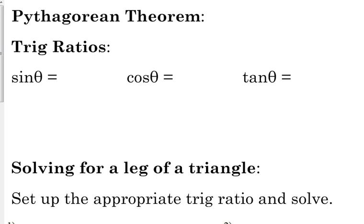I've got a spot there at the top just for you to rewrite in the Pythagorean theorem and your trig ratios, just to make sure we've got it. So, Pythagorean theorem, a squared plus b squared equals c squared.